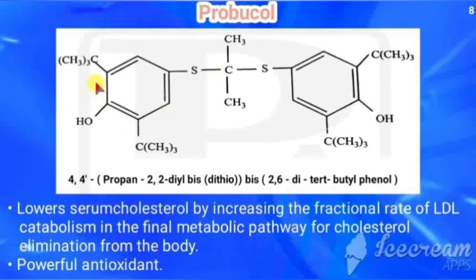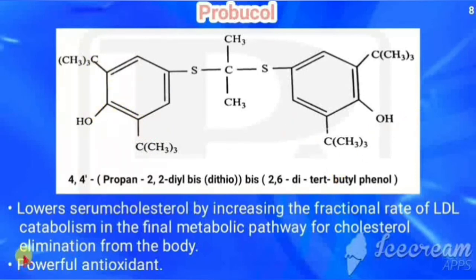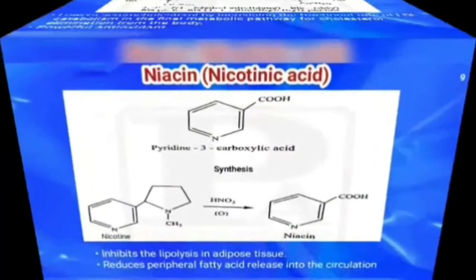The next drug is probucol. It has a phenol ring with tertiary butyls at positions 2 and 6; the same pattern on the other phenol. The fourth position of each is connected to sulfur, and the two sulfurs are connected to the second carbon of a propane chain. The chemical name is 4,4'-[(1-methylethylidene)bis(thio)]bis[2,6-di-tert-butylphenol]. It lowers serum cholesterol by increasing the fractional rate of LDL catabolism in the final metabolic pathway of cholesterol elimination, and is used as a powerful antioxidant.